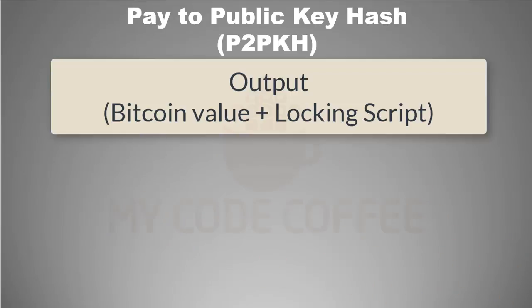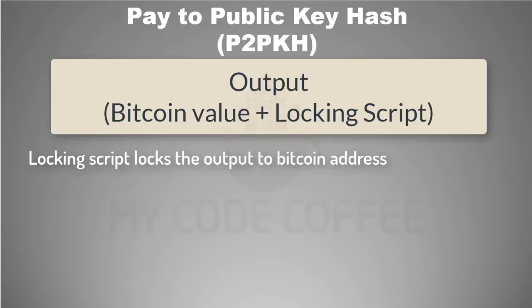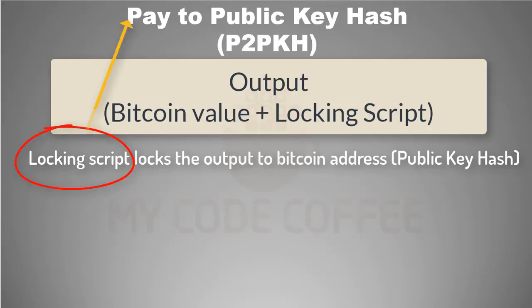We know that a transaction output contains a locking script, and the most common form of the locking script will lock the output to a Bitcoin address. We know that a Bitcoin address is the hash of a public key, and this is why this type of locking script is called Pay to Public Key Hash, or P2PKH. If an output is locked to your Bitcoin address, it means that it is your fund and you can spend it. So when we say that Alice has transferred some bitcoins to Bob, all it means is that Alice created an output transaction which has a locking script that locks this output to Bob's Bitcoin address.